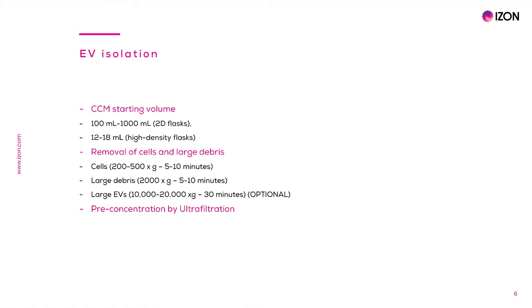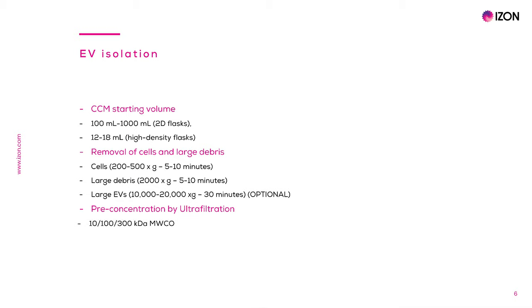When the CCM starting volume is considerably large, a pre-concentration step is recommended. There are several methods to concentrate EVs in a sample, but the most common one is ultrafiltration. Ultrafiltration allows separation of EVs by size by passing the sample through a filter with protein-based pore sizes, for example 10, 100, or 300 kDa. Everything larger than the pore size is retained — essentially all EVs — while most proteins pass through. The pressure applied to the ultrafiltration device can be centrifugal force or cross-flow, which uses a pump. Input volumes vary from 0.5 ml to 1 liter or more, and samples can be concentrated 20 to 50 times.